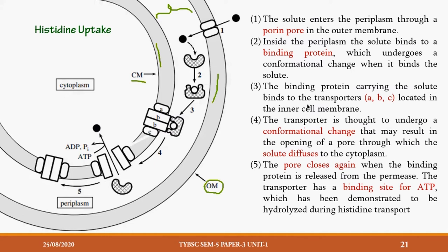Let's now learn in detail about exactly how transport happens here — same concept as before, nothing difficult. Histidine is outside the cell. It is going to cross the outer membrane through a porin pore. The name of this protein is porin. Once inside the periplasm, it has to bind to its respective binding protein. This binding protein then undergoes a conformational change.